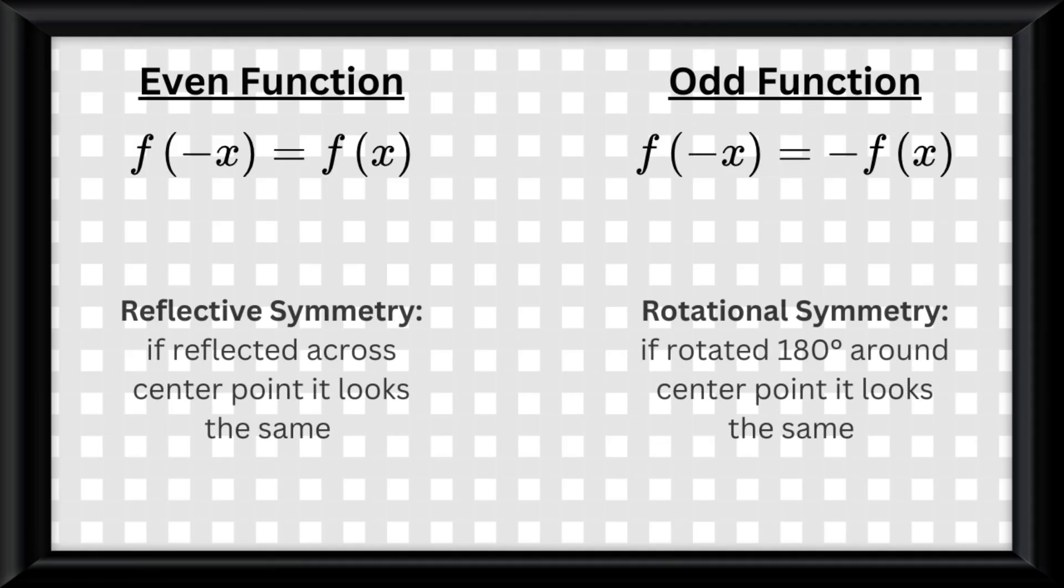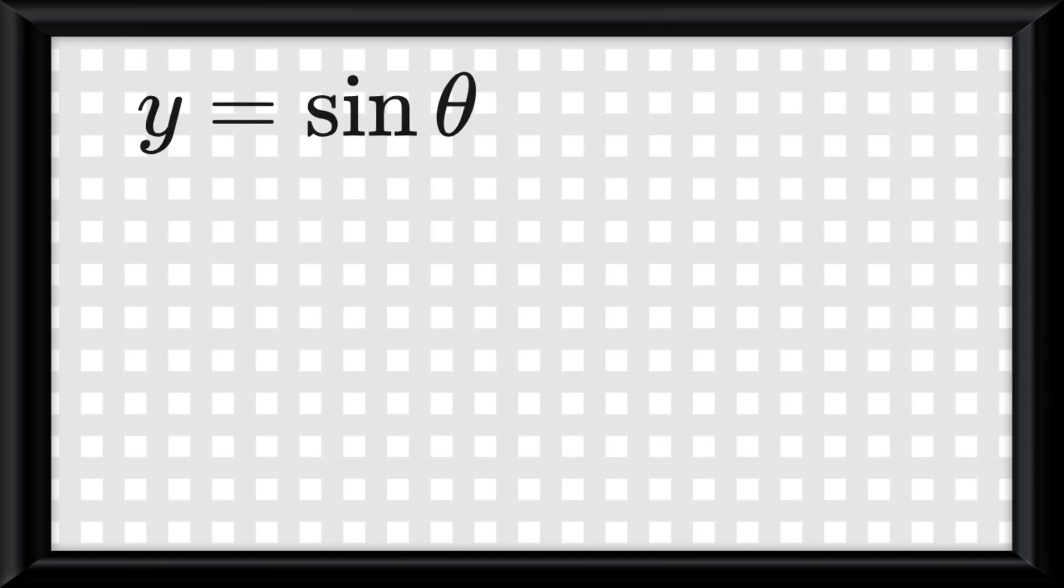If we were to apply these properties to the sine and cosine functions, or try the rotational and reflective symmetry on the graphs, you will see that y equals sine of theta is an odd function, and y equals cosine of theta is an even function.